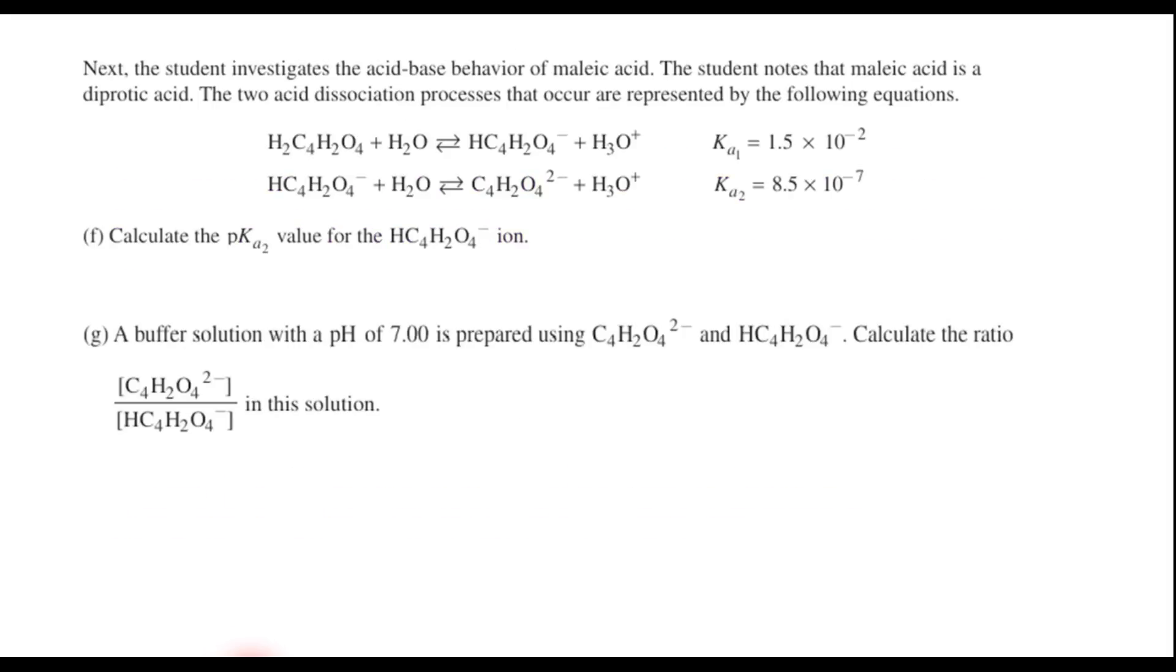Now for F, we go back to acid base. And so we have a student who's investigating the acid base behavior of maleic acid. The student notes that the maleic acid is a diprotic acid. And we have the two processes here. And part F says, calculate the pKa2 value for this ion that's produced in the second dissociation. Well, pKa just means negative log. So if the Ka is 8.5 times 10 to the negative 7th, well, that means that the pKa is just the negative log of 8.5 times 10 to the negative 7th. So when you key that into your calculator, the answer is about 6.07.